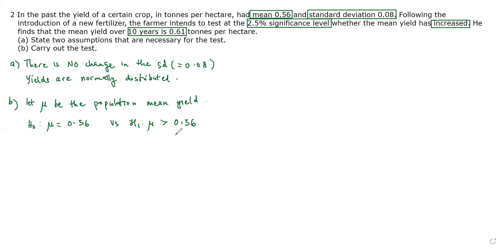The second step after stating the null and alternative hypothesis is to state the test statistics. So the test statistics that we use is the Z statistic: x̄ minus μ divided by σ over square root of n. And this follows a normal distribution with mean 0 and variance 1.